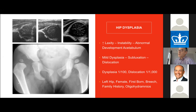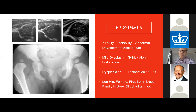Risk factors to consider include left hip involvement, female patients, firstborn children — given that the first-time uterus has less room for hip development — breech babies, any patient with a family history, and oligohydramnios.